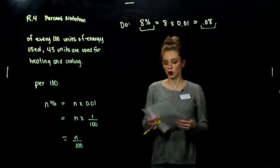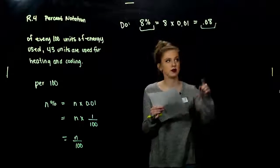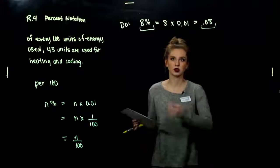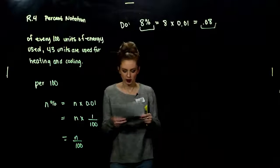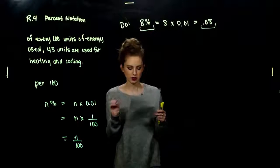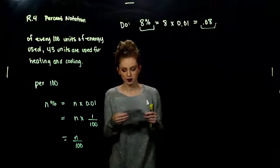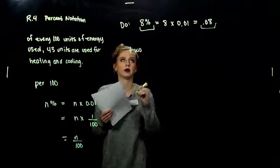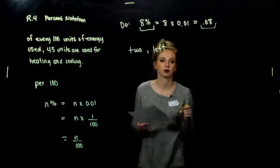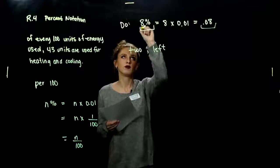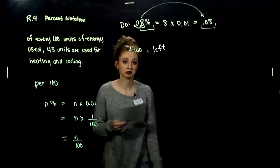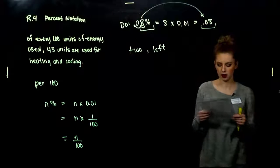So, from percent notation to decimal notation, what has to happen? To convert from percent to decimal, move the decimal point two places to the left and drop the percent symbol. In our last example, 8%, my decimal point was there. If I move one, two units, I need to add another zero, get rid of the percentage, and we're at 0.08.